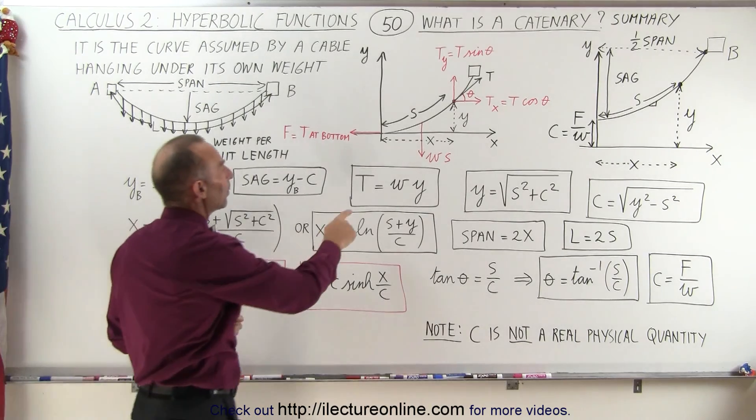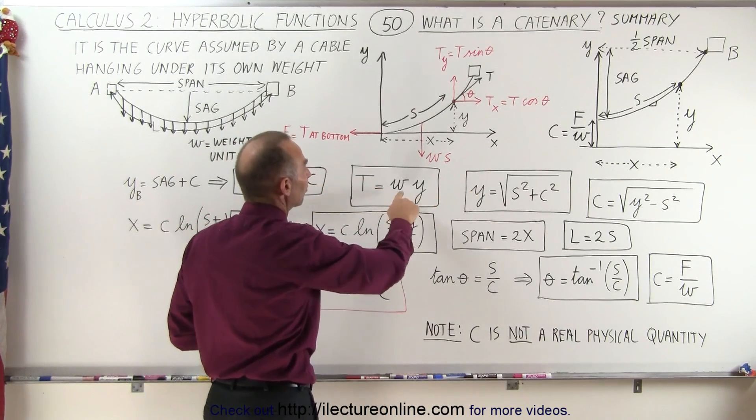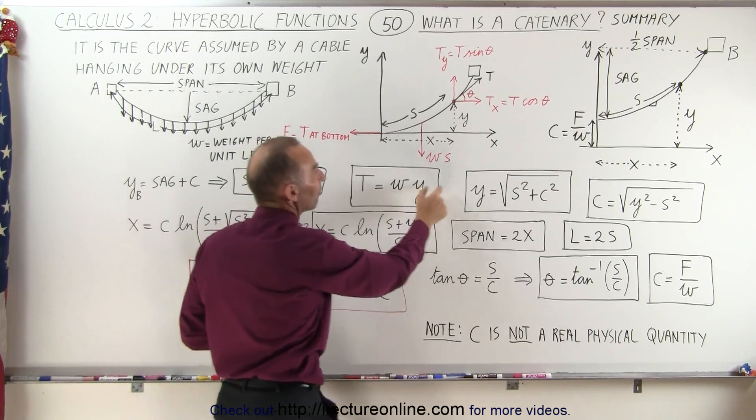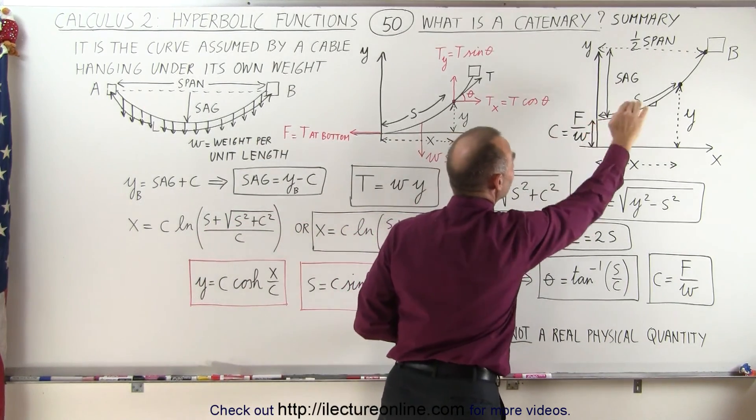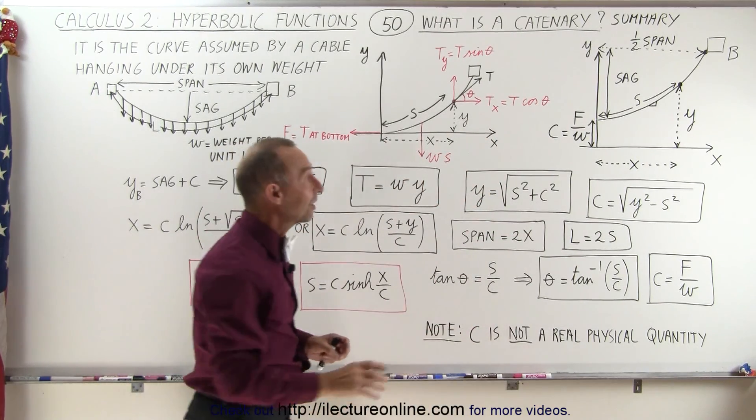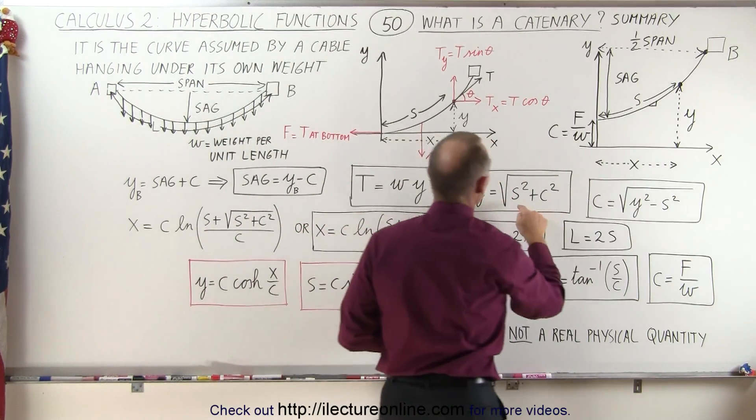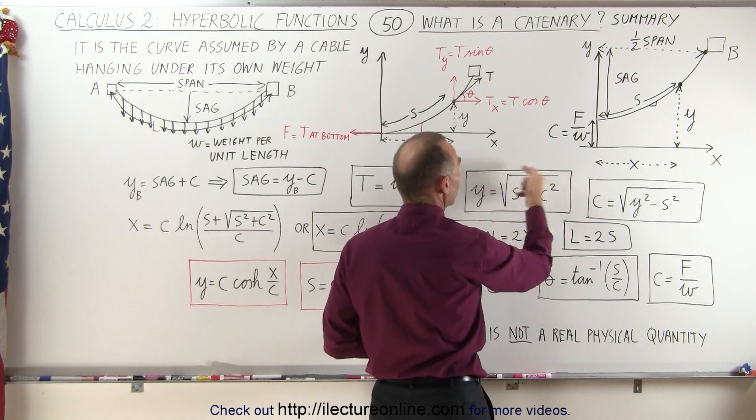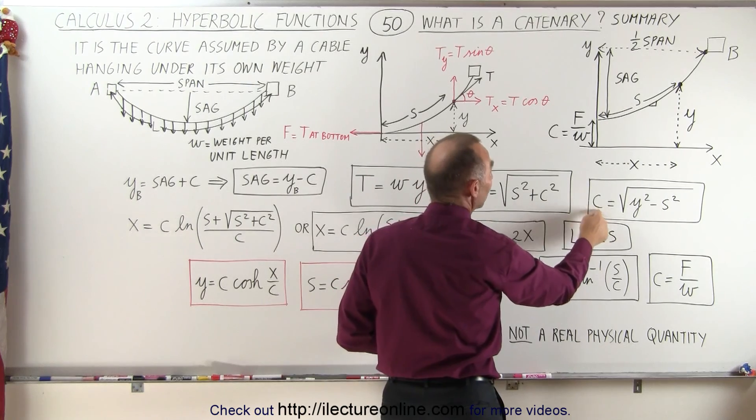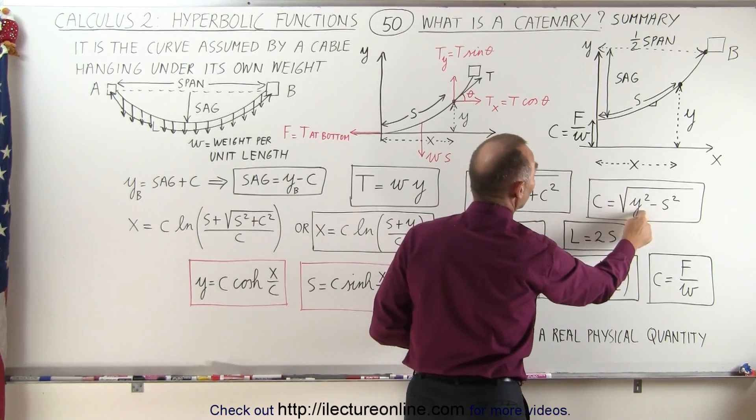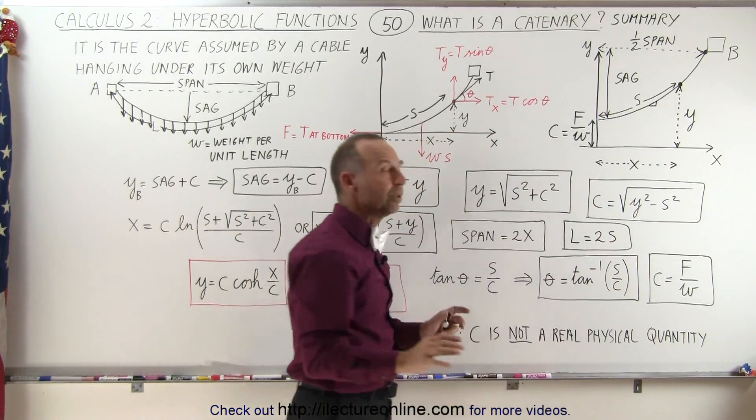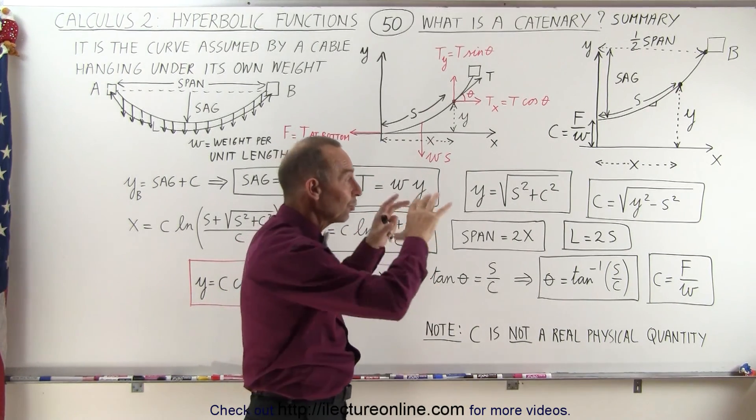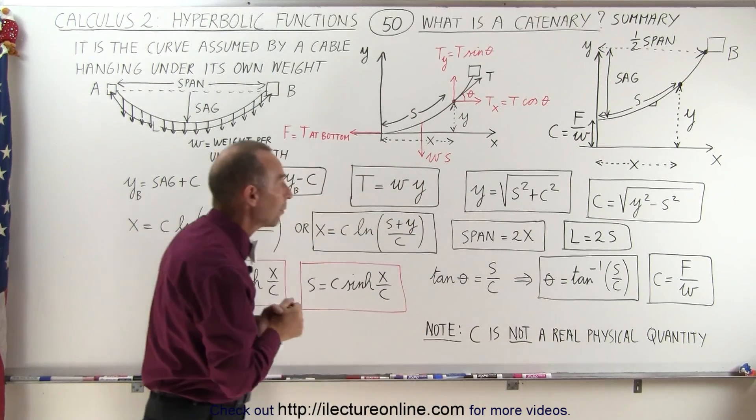Next, the tension in the cable anywhere along the cable can simply be defined as the product of the weight per unit length times the distance from the origin to any point on the cable. We can also express that distance y as being equal to the square root of s squared plus c squared, and therefore if we solve this equation for c, we can express c in terms of the square root of y squared minus s squared. The reason why we want all those equations is because sometimes we're given certain things and not others, and those will then be the only ways in which we can find what we're looking for.